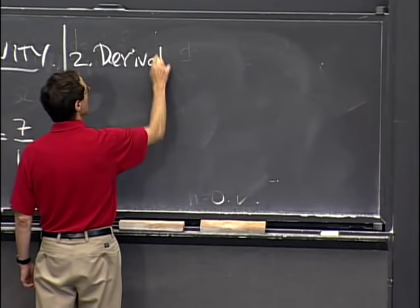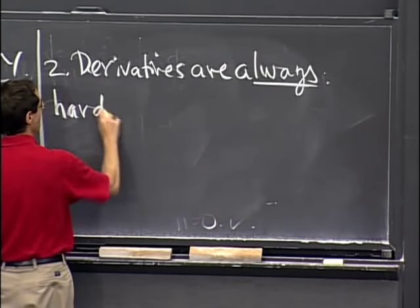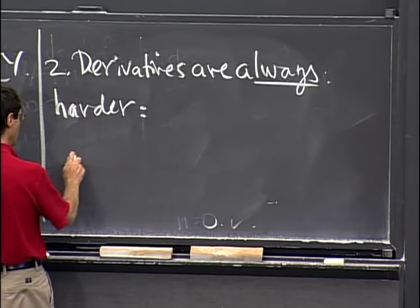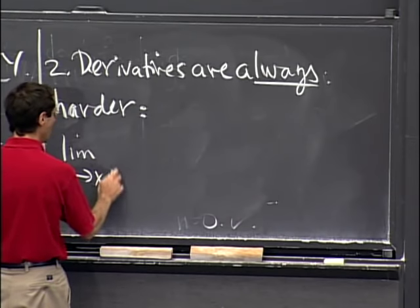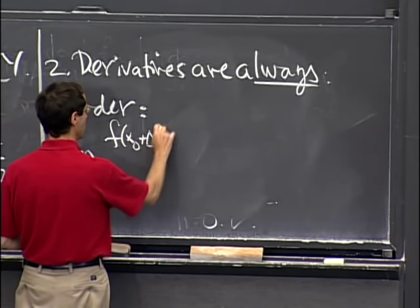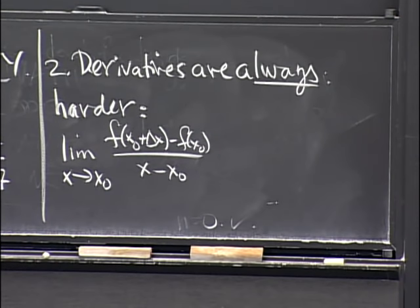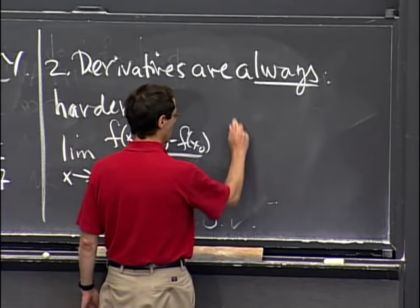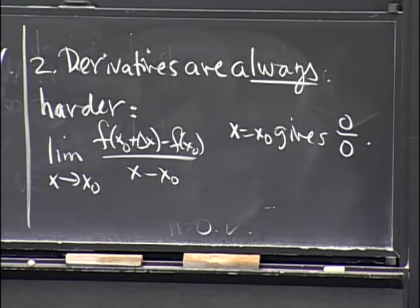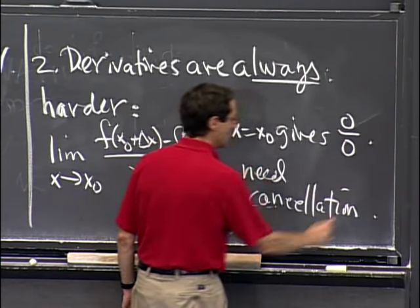Derivatives are always harder than that. When you take a derivative, you're taking the limit as x goes to x₀ of [f(x) − f(x₀)] / (x − x₀). If you plug in x = x₀, you always get 0/0. So we always need some cancellation to make sense of the limit.